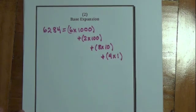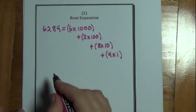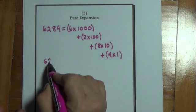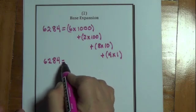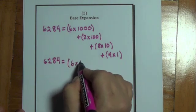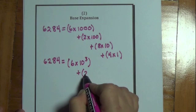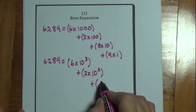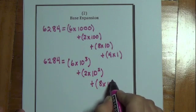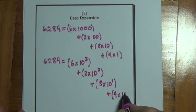Now this is a base 10 expansion, but it really isn't readily clear that it's a base 10 expansion. I can write it another way to show this. This is 6,284. I can write this as 6 times 10 to the 3rd power plus 2 times 10 to the 2nd power plus 8 times 10 to the 1st power plus 4 times 10 to the 0 power.